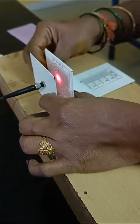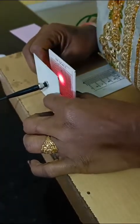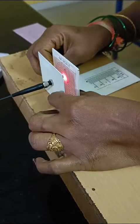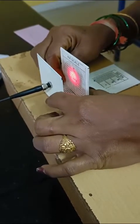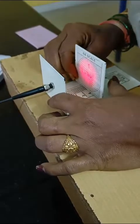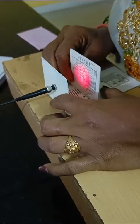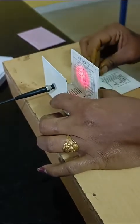For example, place it at 4mm, then move to 8mm, 16mm, 20mm, and so on. Take 5 to 6 readings at different distances.